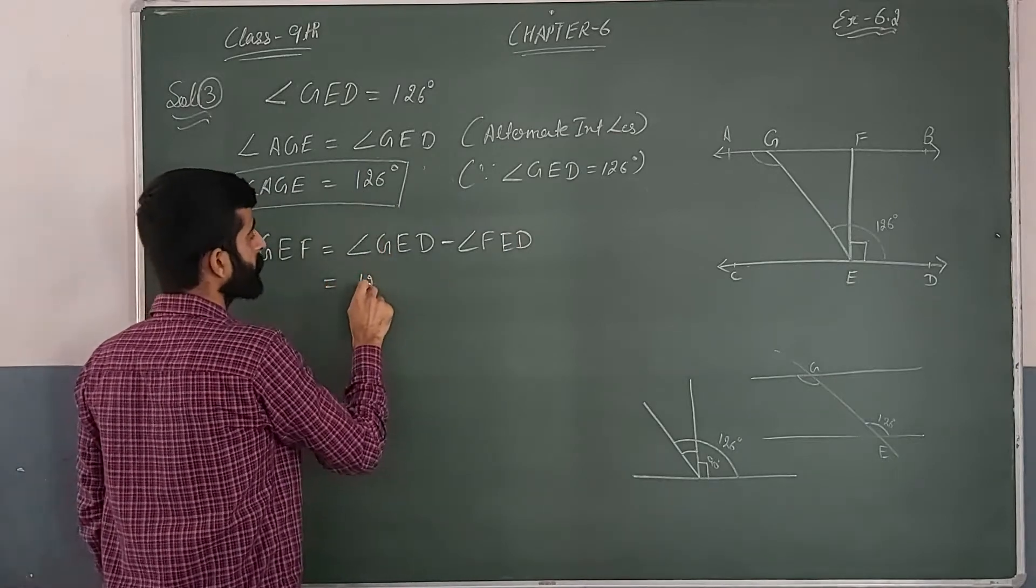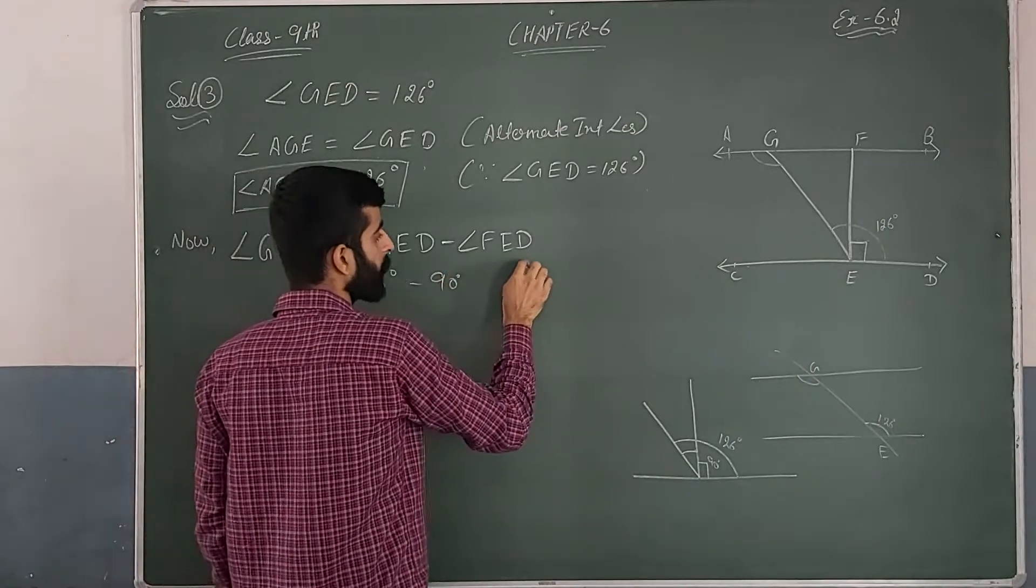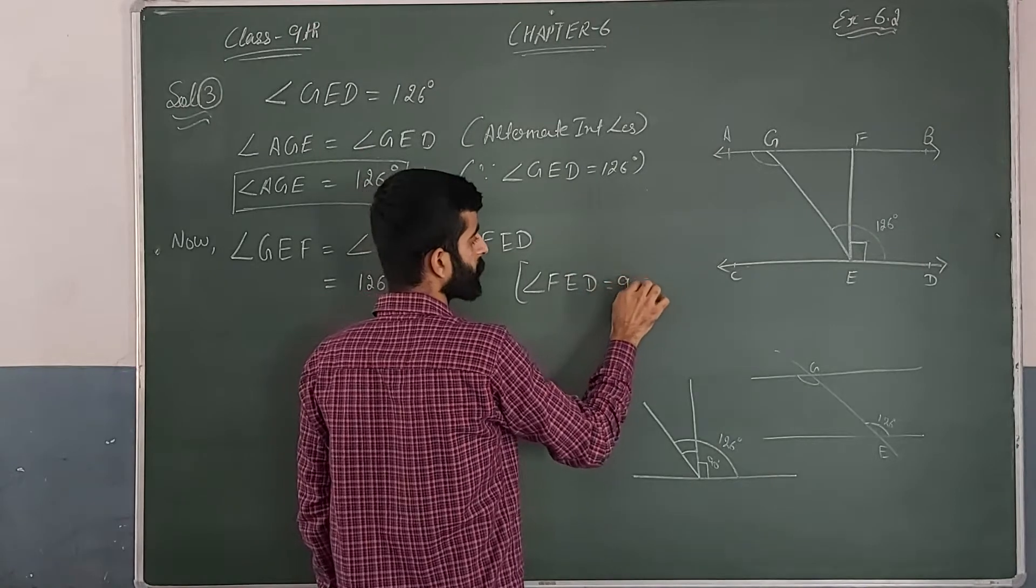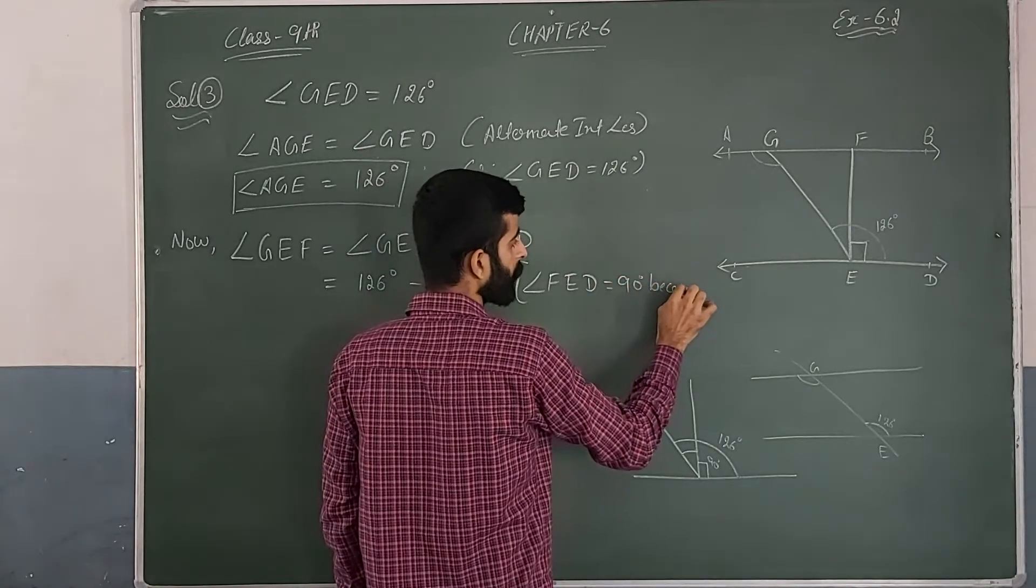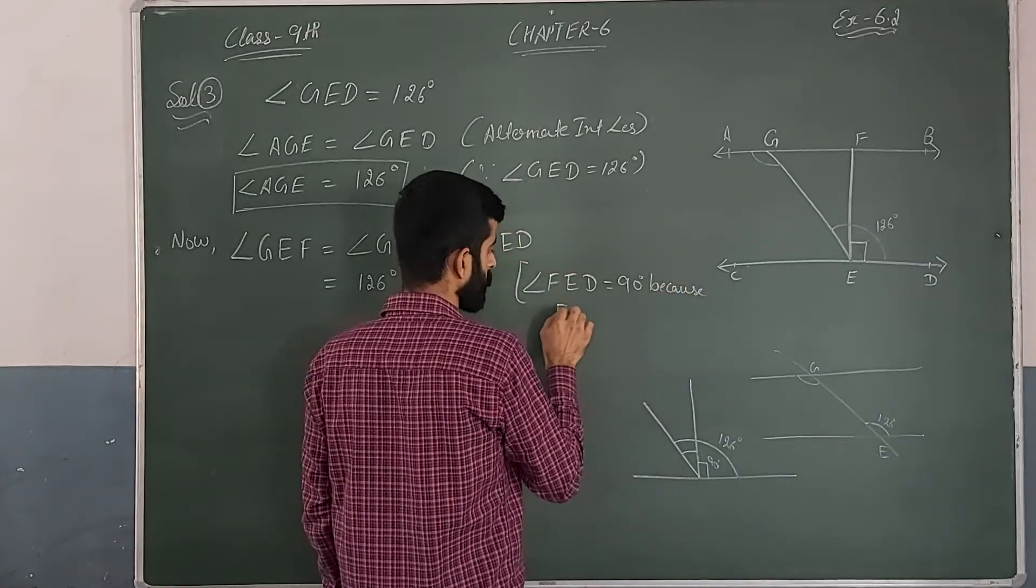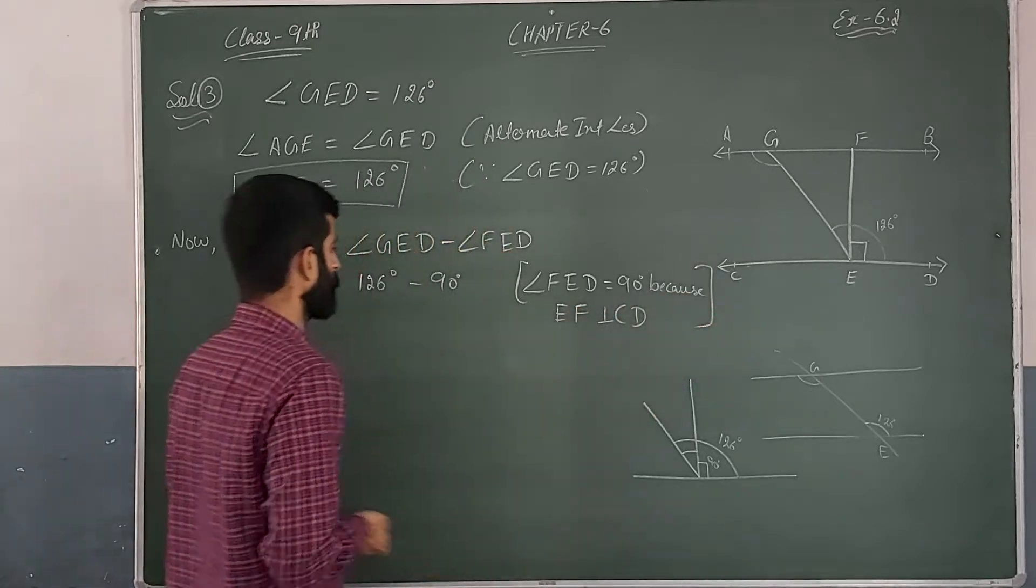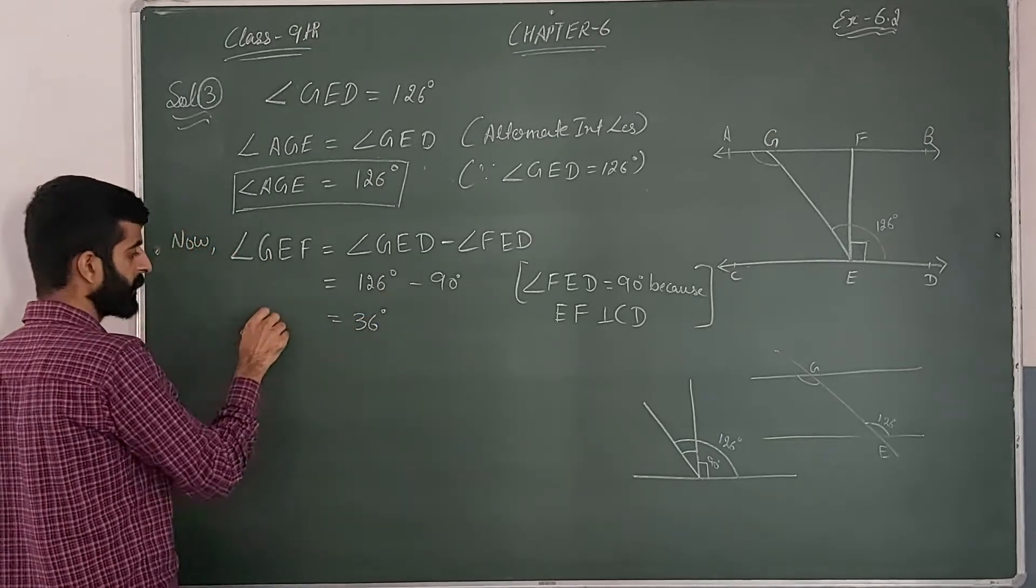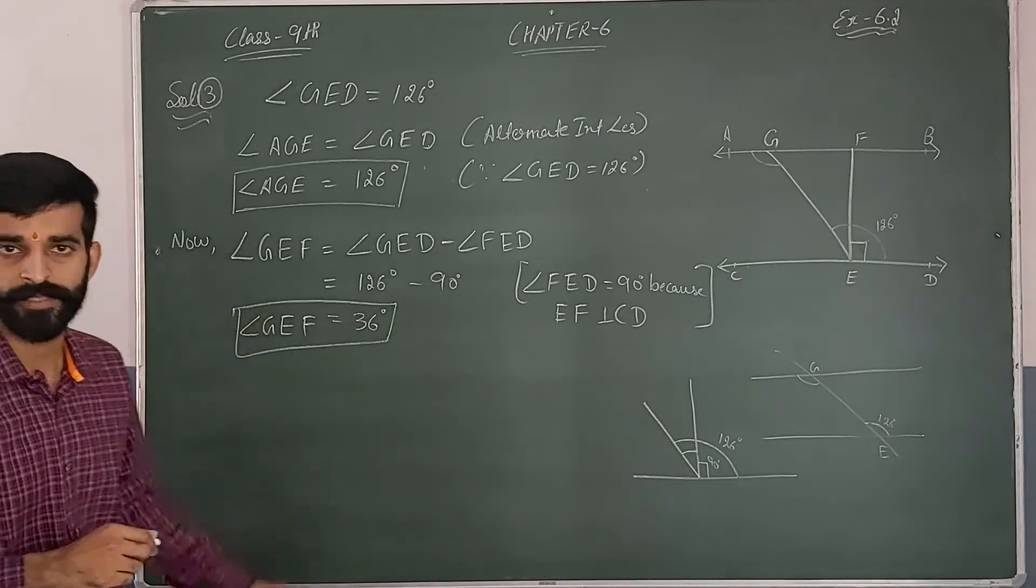Angle GEF equals angle GED minus angle FED. Angle GED we already know is 126, angle FED equals 90. So 126 minus 90 equals 36 degrees. This means angle GEF is equal to 36 degrees.